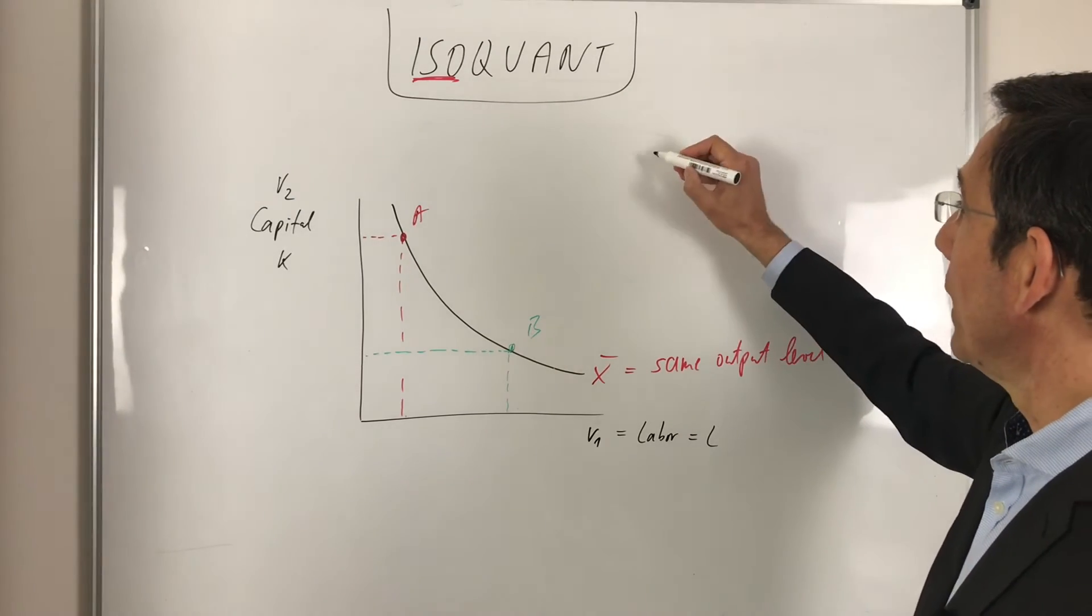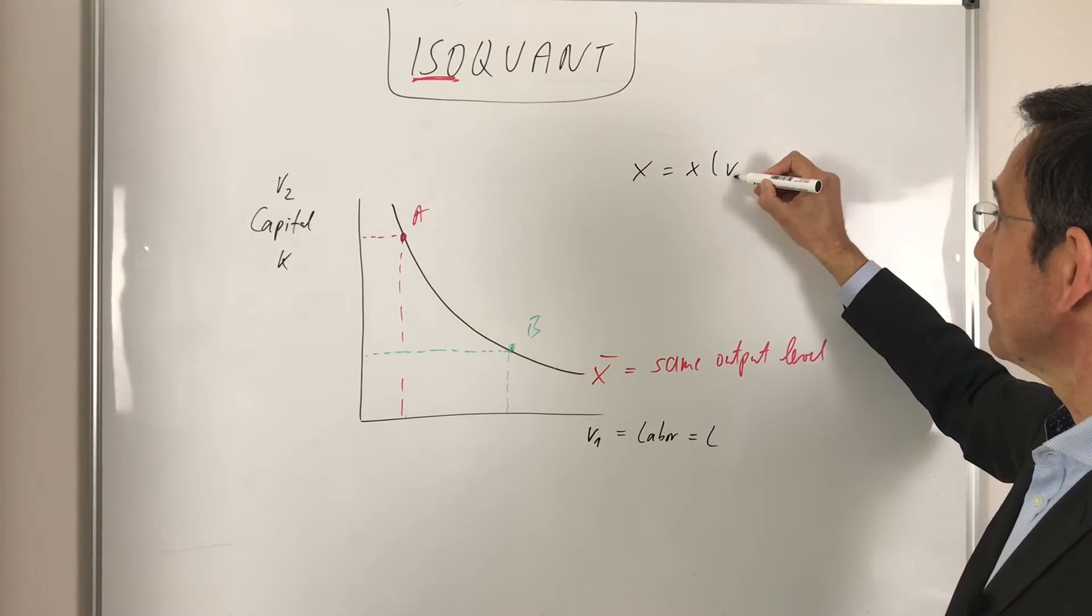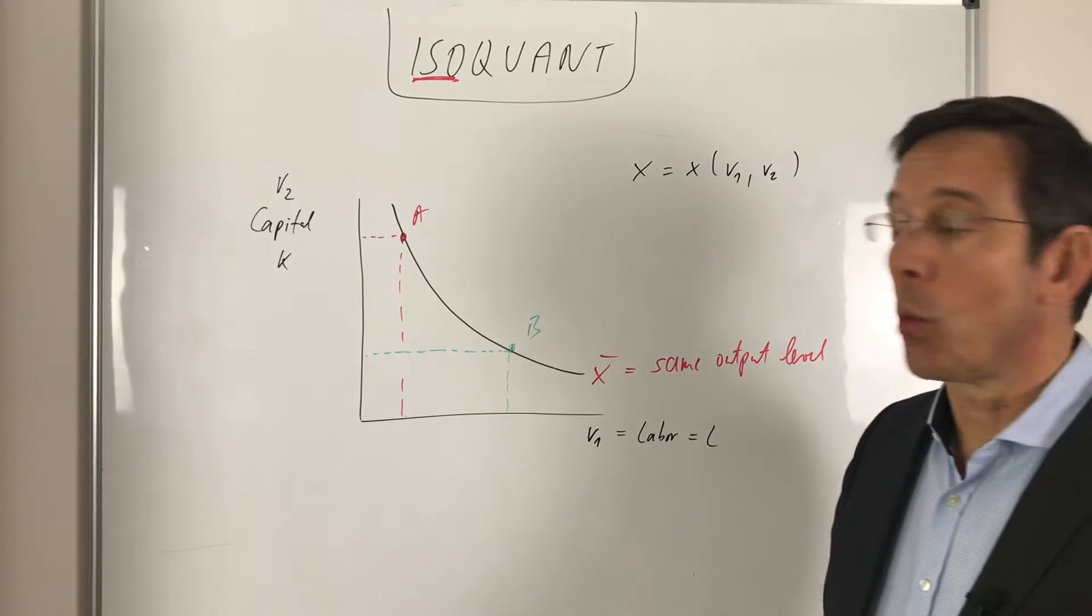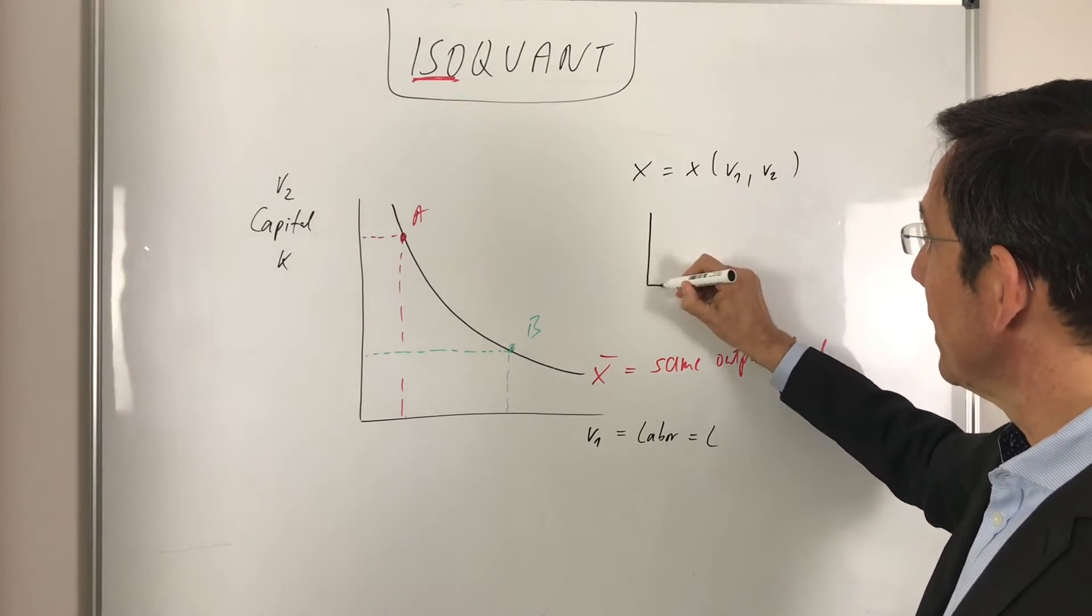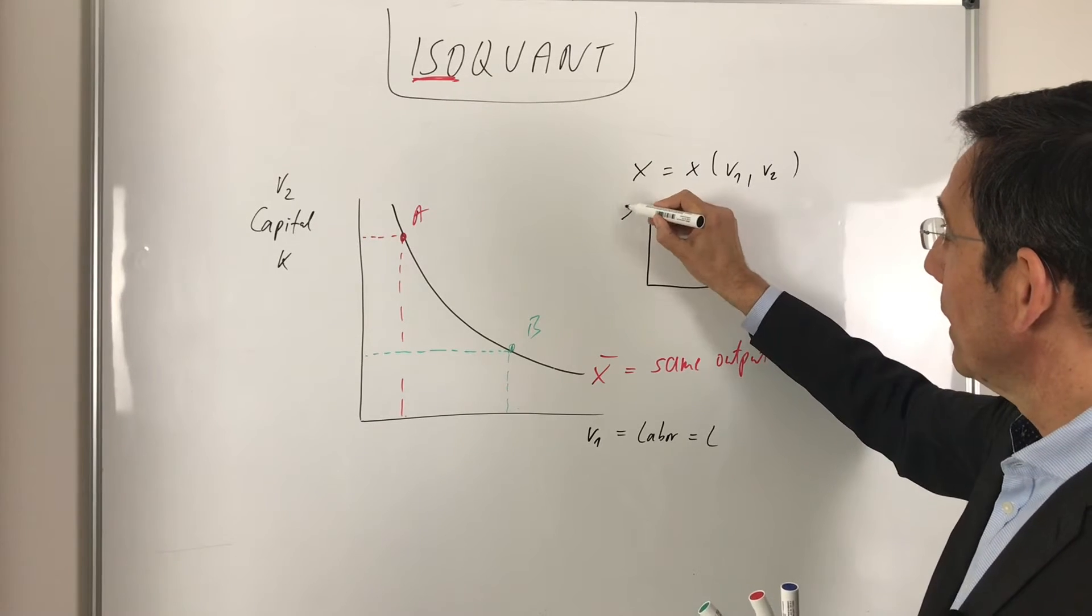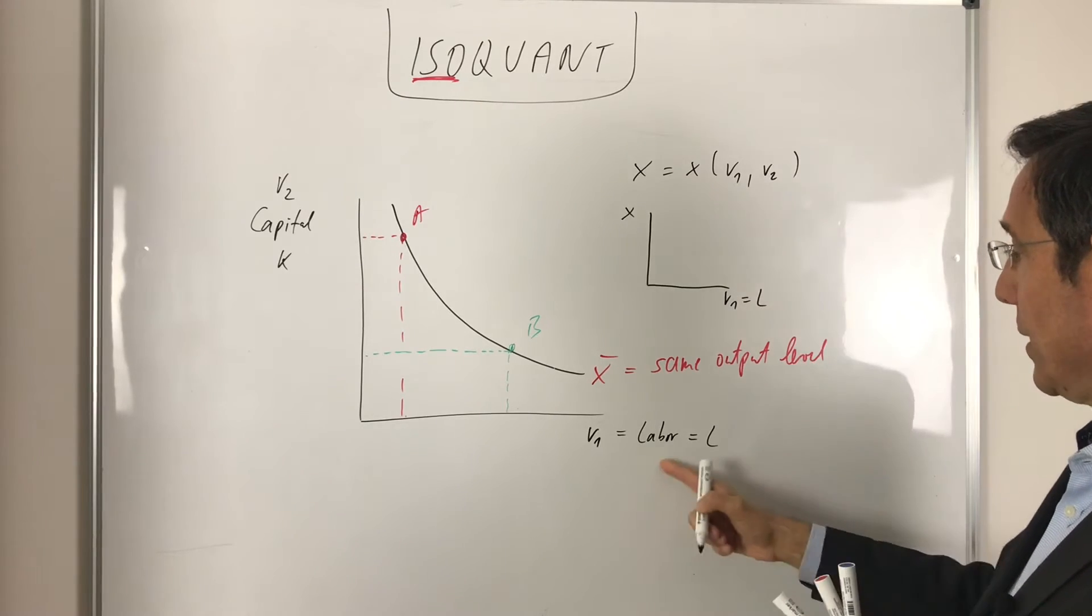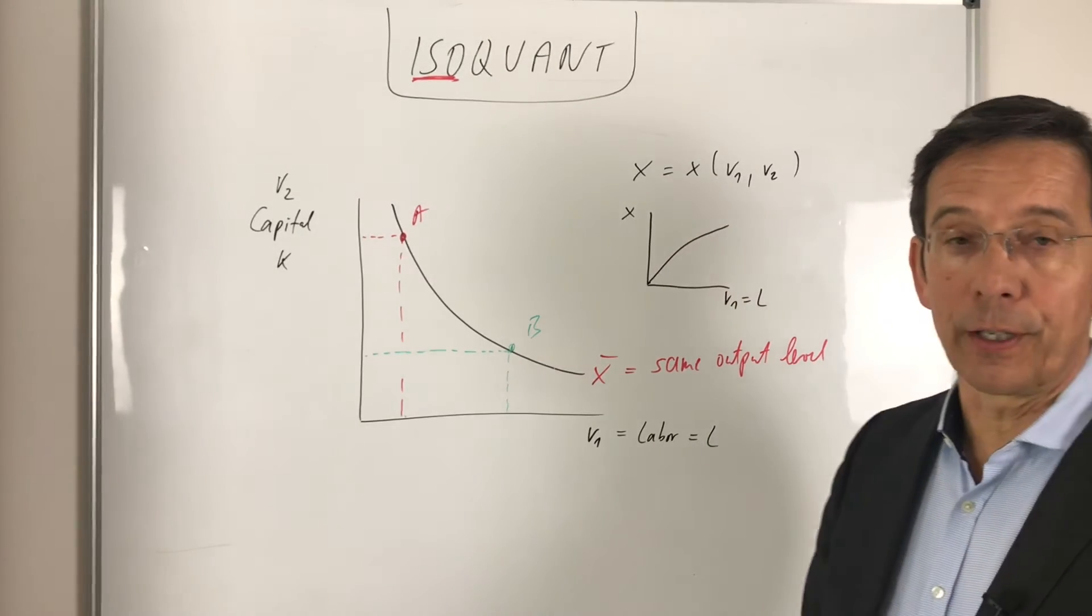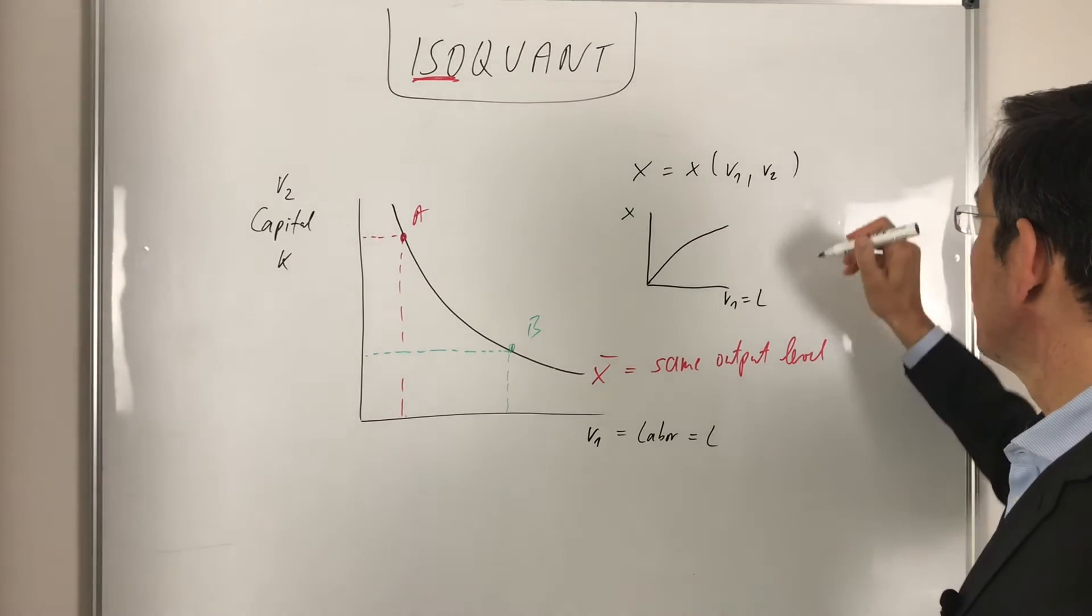So we have in mind that the production function depends on two input factors, v1 and v2. And we also have in mind that, in fact, here we see, let's take input factor 1, which is labor, we have such a production function with diminishing marginal productivity.